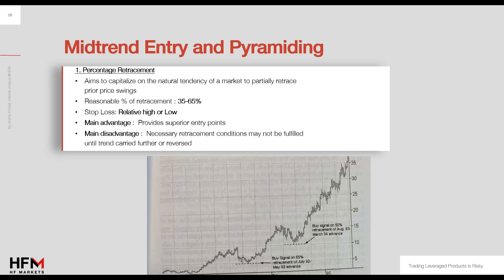The 35% to 65% retracement is a reasonable choice according to Mr. Schwager. A price in the proximity of the relative low or relative high could be used as a stop point on the position.